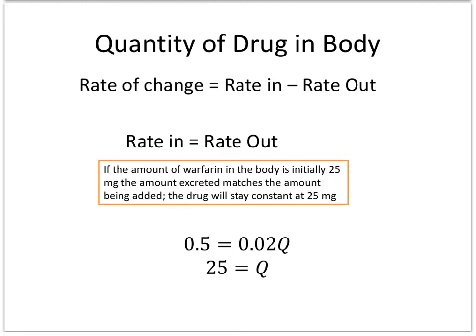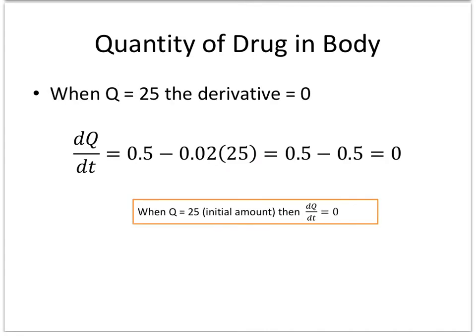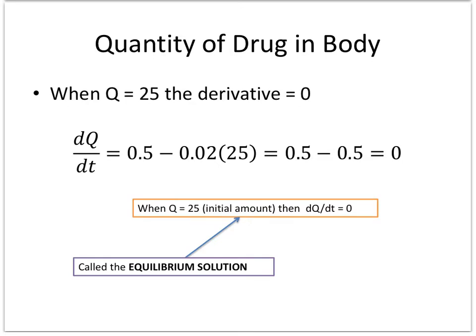If there's too much in there it's going to start to lower down, if there's not enough it's going to raise up to this level. So if the amount of warfarin in the body is initially 25 milligrams, then you could see if you solve this for Q, then the drug will stay constant at 25 milligrams. Now what I think is easier to see when we look at the differential equation, because we said when the rate in equals the rate out, if I plug in this initial value of 25, then I see my rate in equals my rate out and so the rate of change is actually zero. And this is what's called the equilibrium solution, where does the rate in equal the rate out or where does this rate of change equal zero.